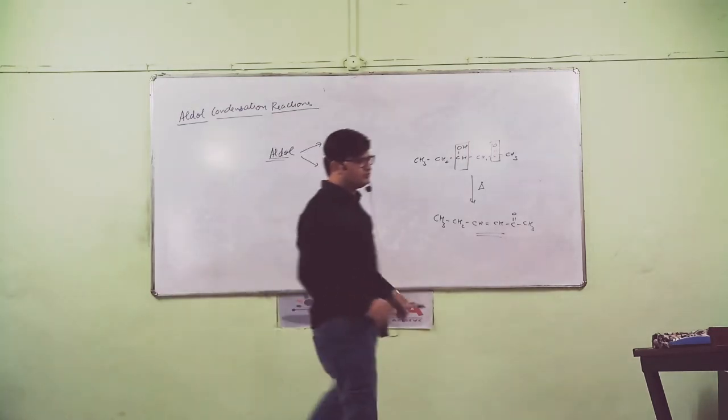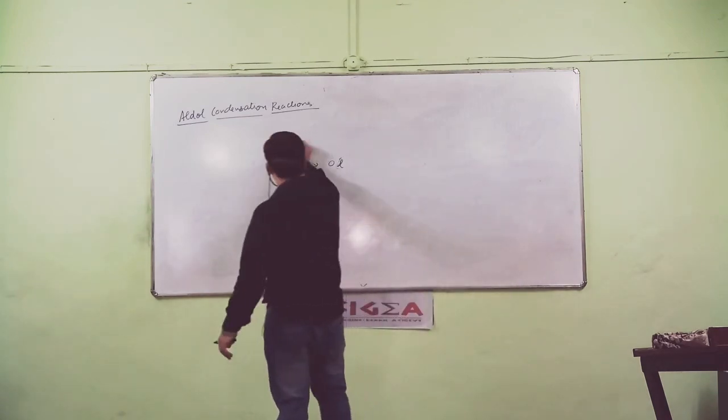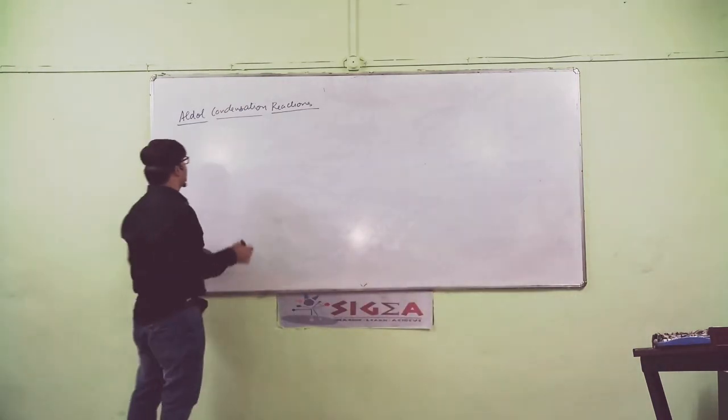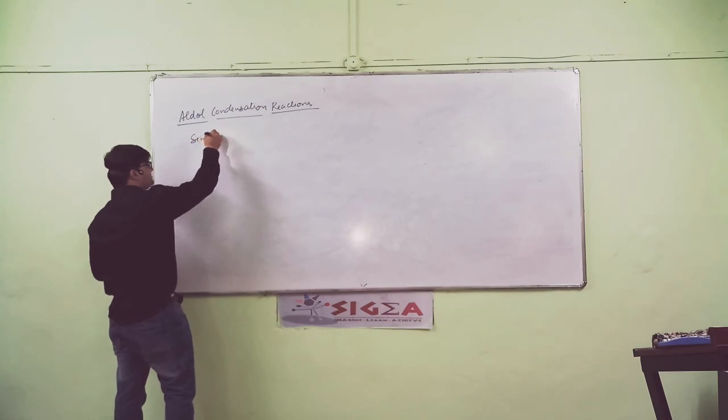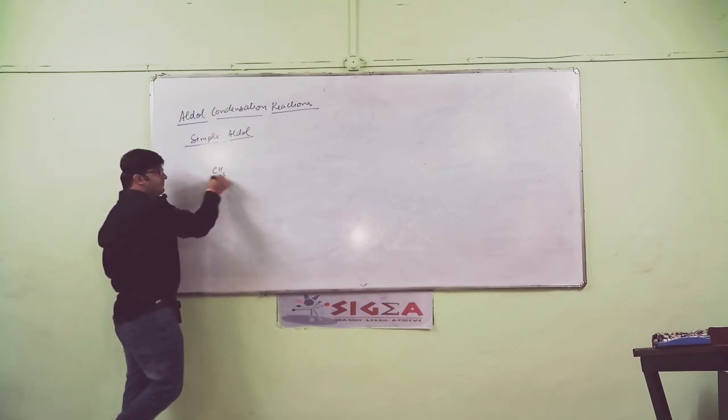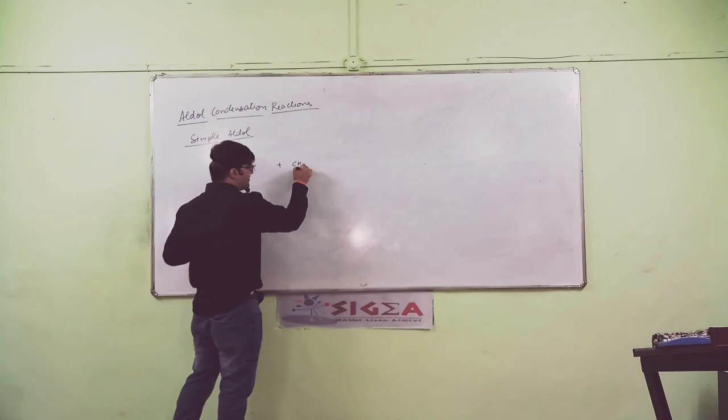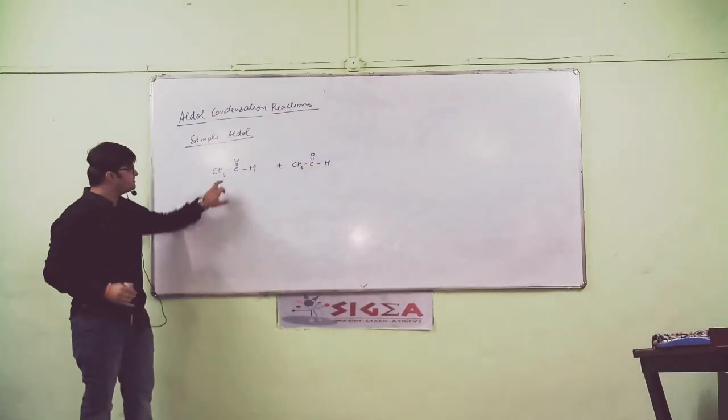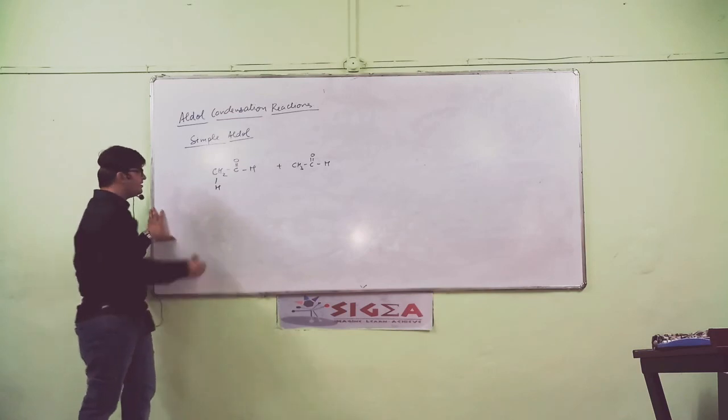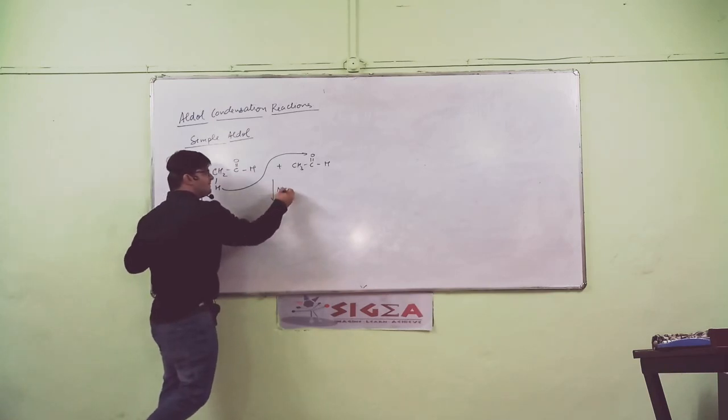We will see how to solve problems on aldol using a shortcut method. The most important example of aldol is the first type called simple aldol condensation reaction. For example, you can consider CH3, C double bond O, H. Here the carbonyl part has partial positive and negative charges.